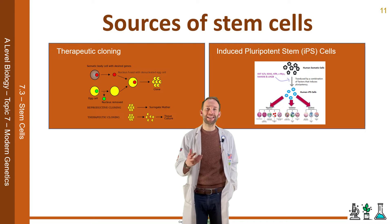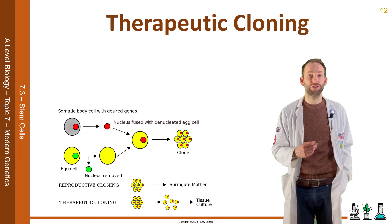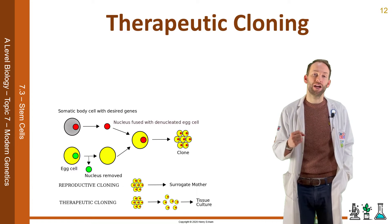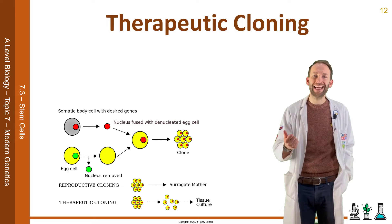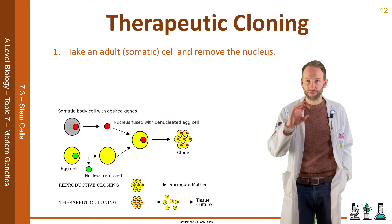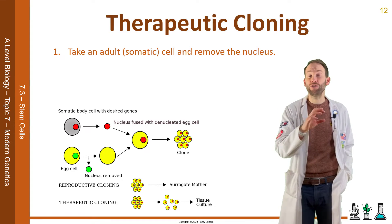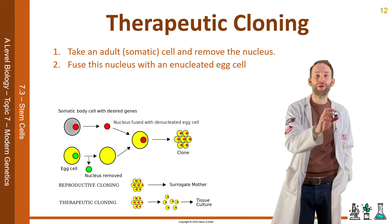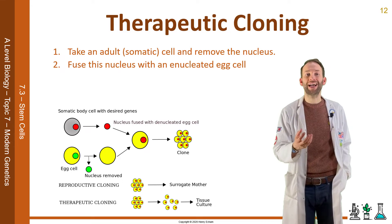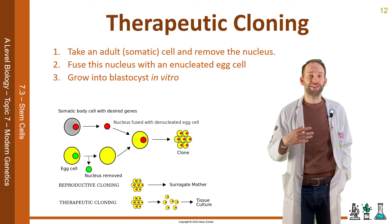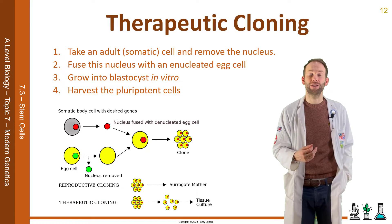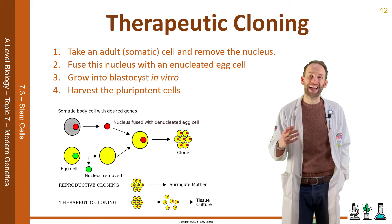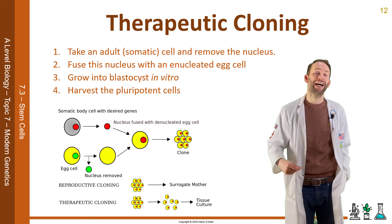Therapeutic cloning works in the same way as making a clone, like Dolly the sheep. However, you don't grow the resulting embryo into an adult — you just use the embryo to harvest stem cells from the blastocyst. You take an adult cell and remove its nucleus, then fuse that nucleus with an enucleated egg cell — one that has had its nucleus removed. Then you grow that into a blastocyst in vitro, it divides, and you harvest those pluripotent cells. They are pluripotent because they've come from an egg cell, but contain the genetic information from the adult.